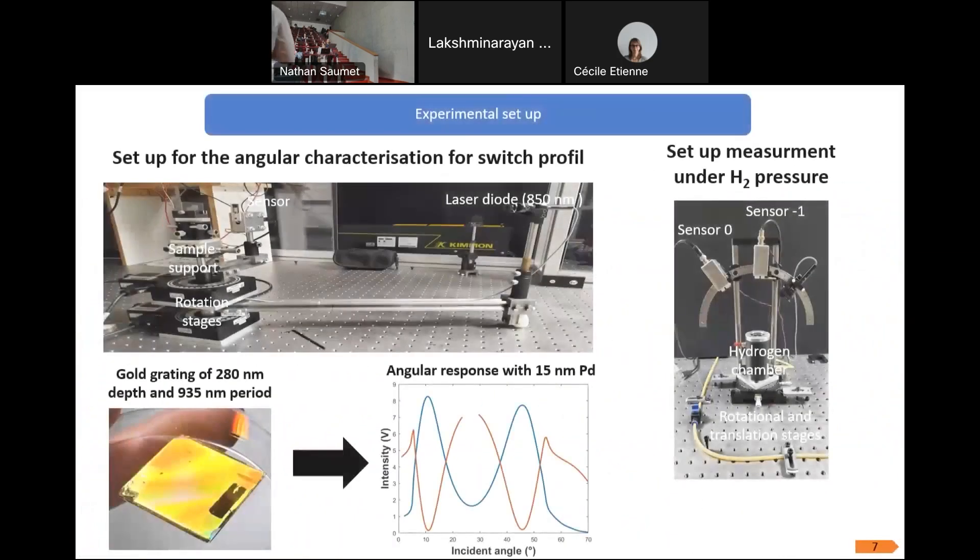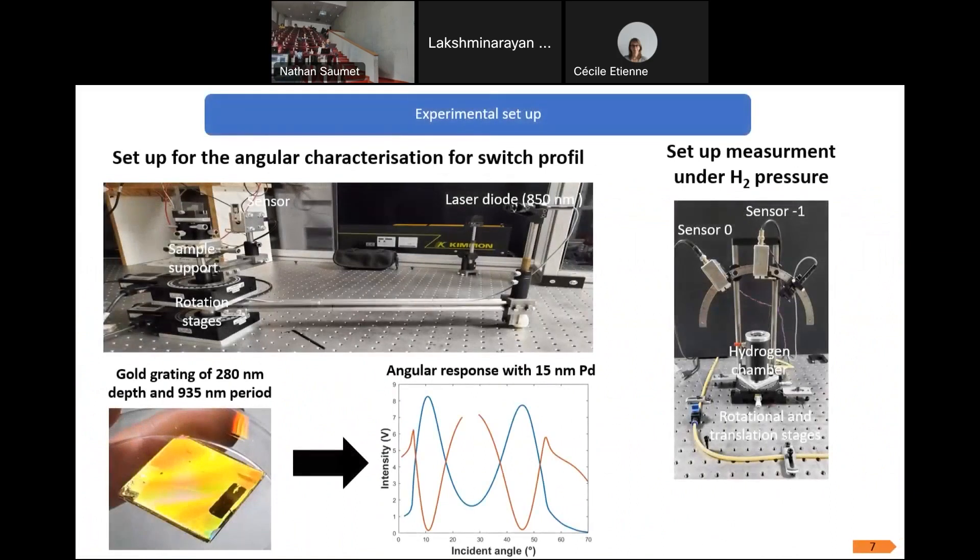To measure hydrogen concentration through our sensors, we have two setups. The first one is a setup to make an angular characterization of our sample. Here we have the example of a gold grating of 280 nanometer depth and 935 nanometer period. The second one is a setup to make angular response. After the angular characterization, we can then find both crossing points and by fixing at the second crossing point, we can then achieve hydrogen measurement on the second bench with a fixed angle.